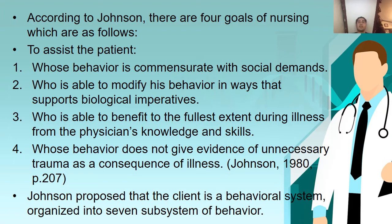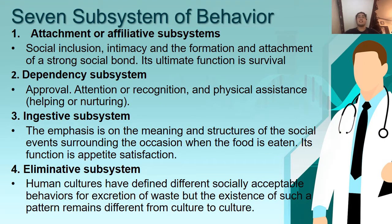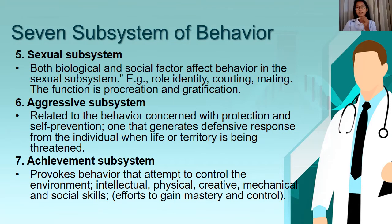Johnson proposed that the client is a behavioral system organized into seven subsystems of behavior. First, the attachment or affiliative subsystem involves social inclusion, intimacy, and the formation of a strong social bond; its ultimate function is survival. Second, the dependency subsystem involves approval, attention, recognition, and physical assistance. Third, the ingestive subsystem emphasizes the meaning and structure of the social events surrounding when food is eaten; its function is appetite satisfaction. Fourth, the eliminative subsystem — human cultures have defined different socially acceptable behaviors for expression of waste, but such patterns vary from culture to culture.